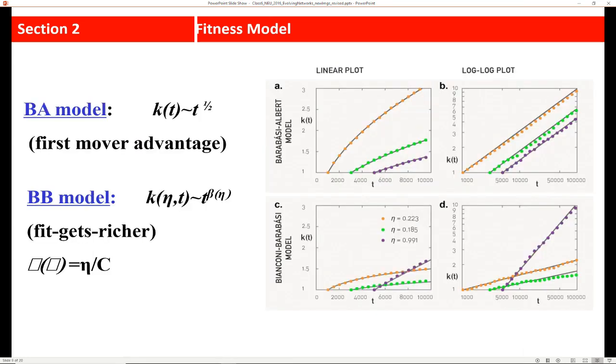The takeaway here is that in the Barabasi-Albert model, we assume all fitnesses are equal, and the sooner a node enters the network, we can assume it will get richer. Contrast that with the Bianconi-Barabasi model - we have a fit-gets-richer phenomenon. We might have a case where a node that enters later actually overtakes nodes that were first movers in the network. I'm sure you can think of examples just like Facebook and Google that did this in real world networks, and you can probably characterize what contributed to their fitness.